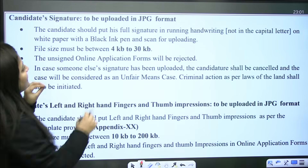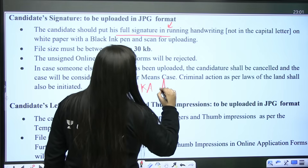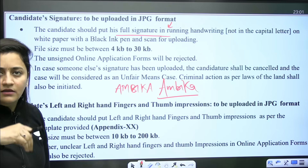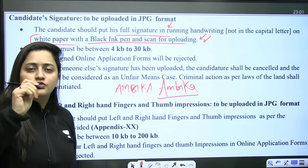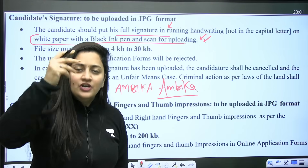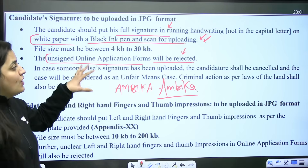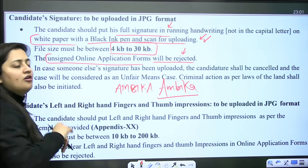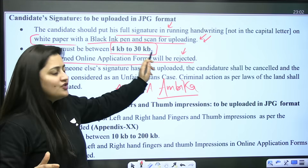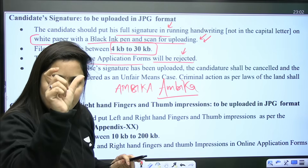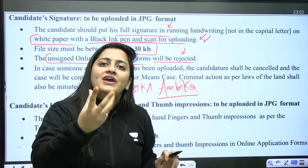For the signature, the candidate should put their full signature in running handwriting — not in capitals. Sign on a white paper with a black ink pen, then scan it for uploading. Unsigned online application forms will be rejected. The file size for the signature should be between 4 KB to 30 KB. For the photograph it was 10 KB to 200 KB, for the signature it is 4 KB to 30 KB.